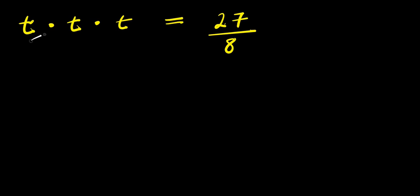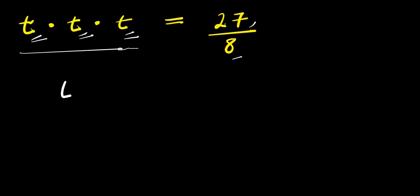How to solve t times t times t equals 27 divided by 8 — we are solving for all values of t that satisfy this equation. Let's start by multiplying the left-hand side: t times t is t squared, times t is t to the power of 3, and this equals 27 divided by 8.